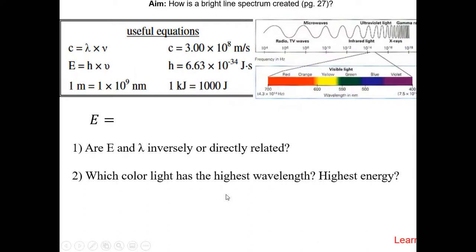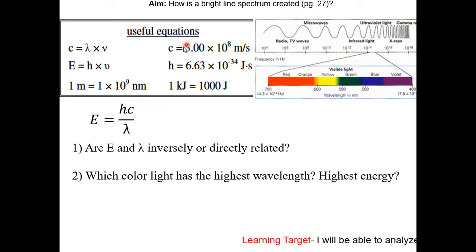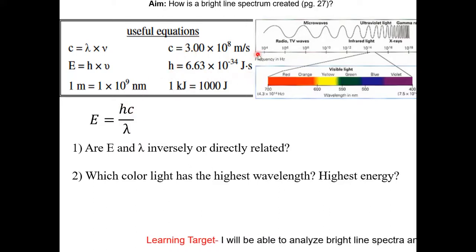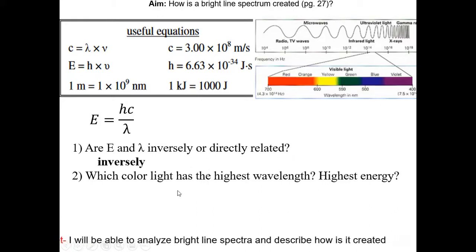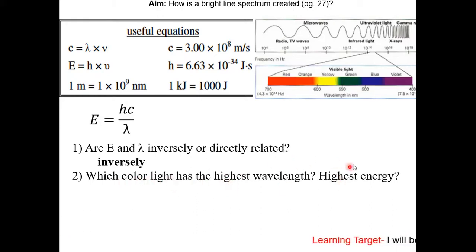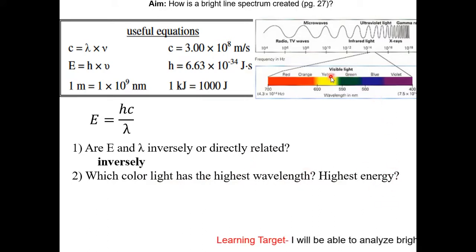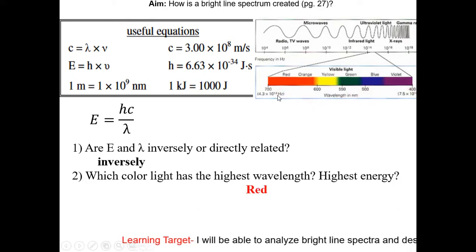How is energy related to wavelength? Energy is equal to the Planck constant times the speed of light over lambda: E = hc/λ. H is the Planck constant and c is the speed of light. Based on this equation, they are inversely related. Which color of light has the highest energy? Since wavelength and energy are inversely related, let's look at the visible light spectrum — red has the highest wavelength, and violet has the highest energy.